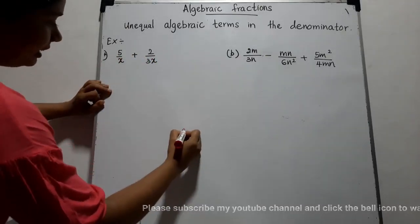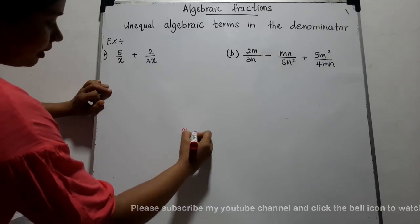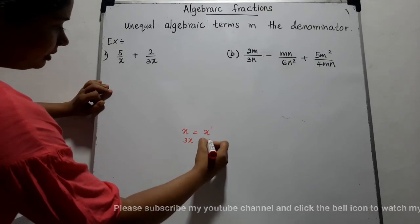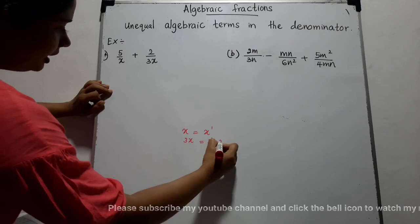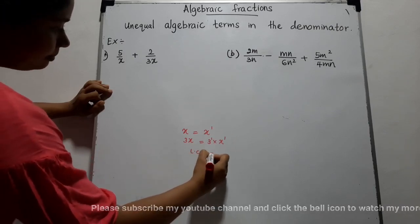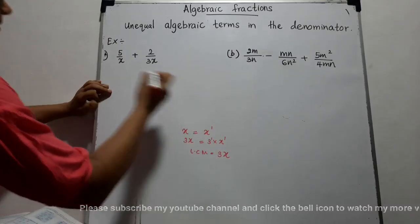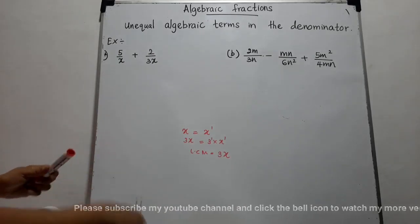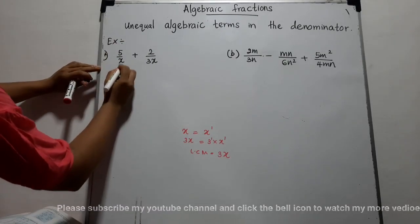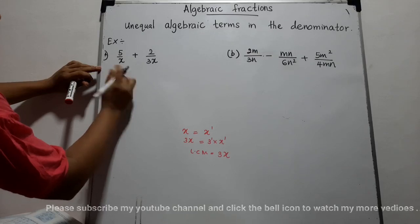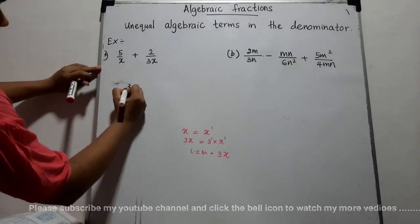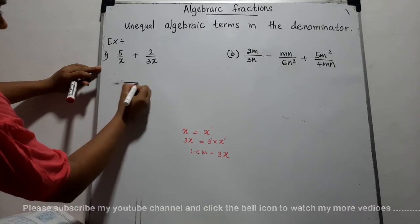Here we have x and 3x. We factorize: x is x times 1; 3x is 3 times 1 times x times 1. The LCM is 3x. Now for 5 over x, to obtain the common denominator 3x, we have to multiply both numerator and denominator.